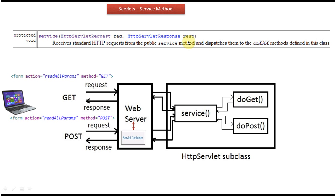The question is who will create these objects and pass them to the service method. The answer is the Servlet container will create the HttpServletRequest object and HttpServletResponse object and pass them to the service method. The HttpServletRequest object contains information about the request and the client, and using the HttpServletResponse object we can set the information we want to send back to the client. That's about the service method of HTTP Servlet, thanks for watching.